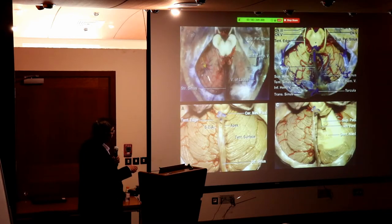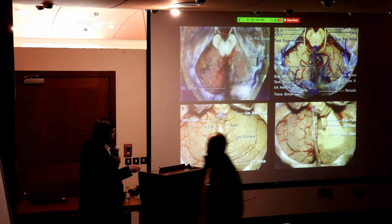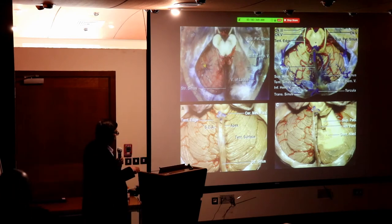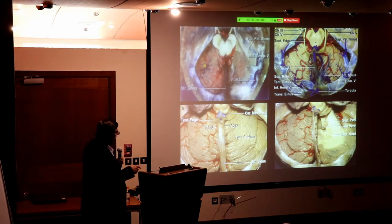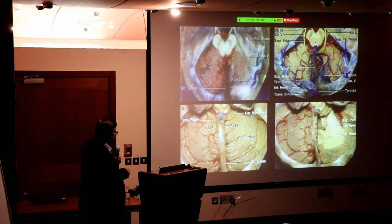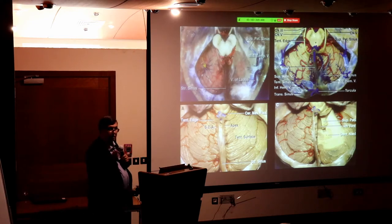With one leaf of the tent removed, we look at the superior surface of the cerebellum, which has three surfaces. This tentorial surface faces the tent; the petrous surface faces the petrous bone; and the third surface is related to the occipital bone — the occipital surface.